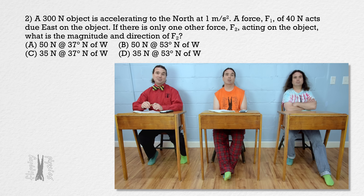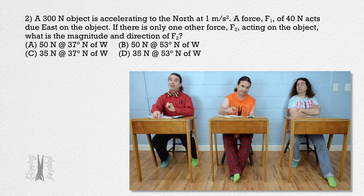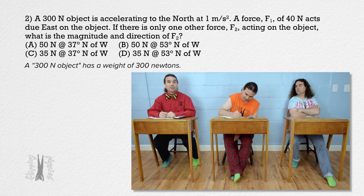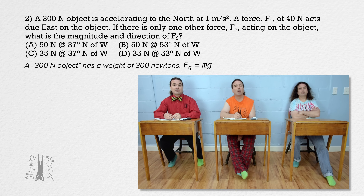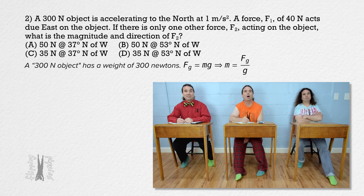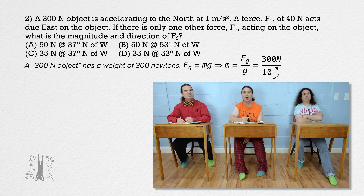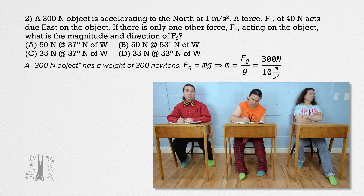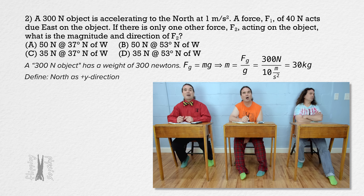Billy, please solve this problem. Well, we know a 300 newton object has a weight of 300 newtons, so let's use that to determine the mass of the object. Force of gravity equals mass times acceleration due to gravity, so mass equals force of gravity divided by acceleration due to gravity — 300 newtons divided by 10 meters per second squared, which is recommended on AP Physics exams — giving us a mass of roughly 30 kilograms.